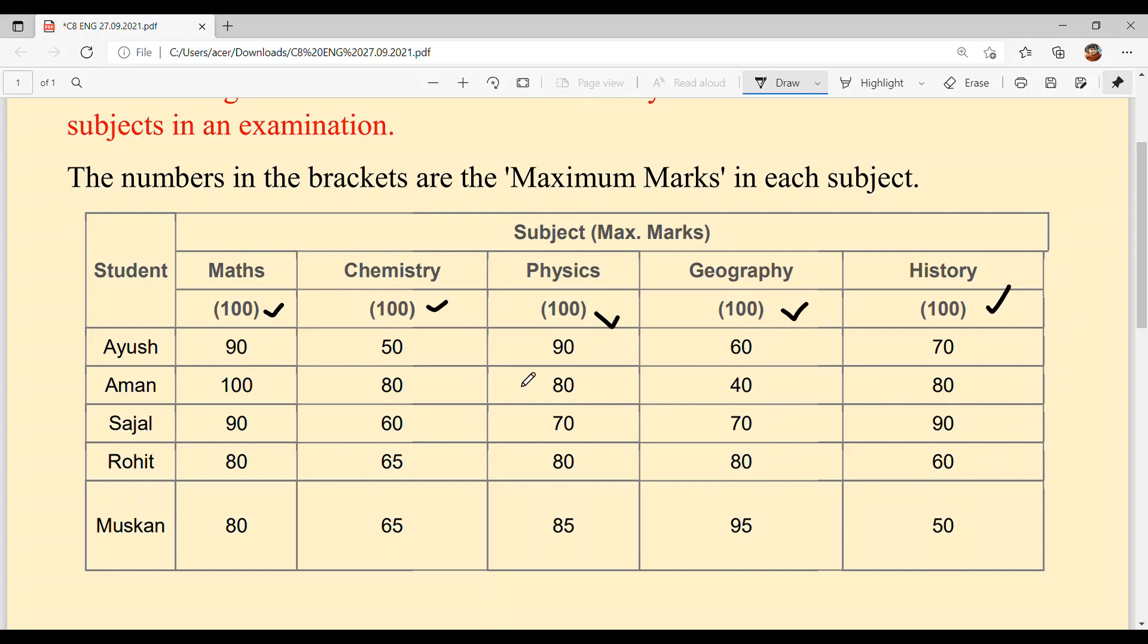Last is Muskan, and she obtained 80 out of 100 in Maths, 65 out of 100 in Chemistry, 85 out of 100 in Physics, 95 out of 100 in Geography, and 50 out of 100 in History. Simple - this table doesn't have any difficulty, there's no tension.